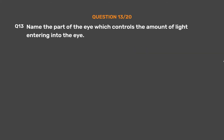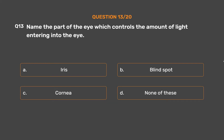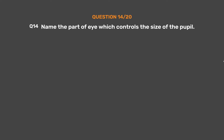Question number 13: Name the part of the eye which controls the amount of light entering into the eye. Option A: Iris. Option B: Blind spot. Option C: Cornea. Option D: None of these. The correct answer is Option A, Iris. The iris controls the amount of light entering into the eye by dilating or contracting the pupil. The iris is a ring made up of pigmented tissues which vary in color.